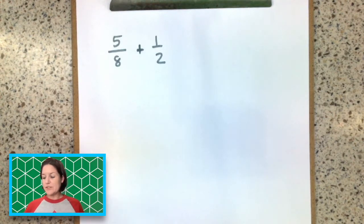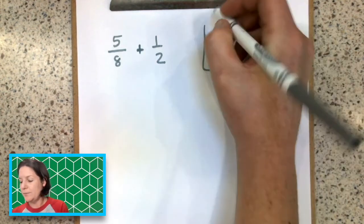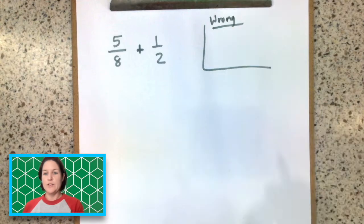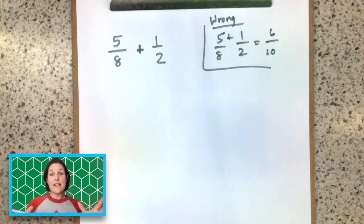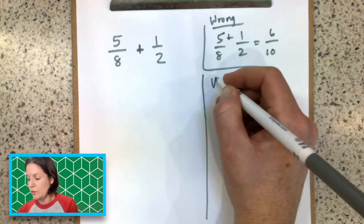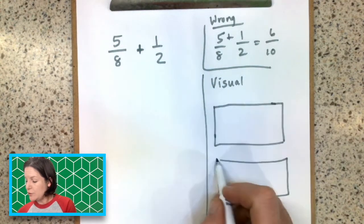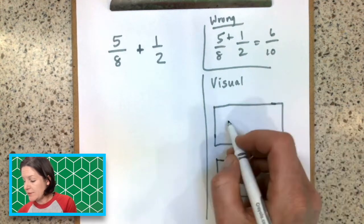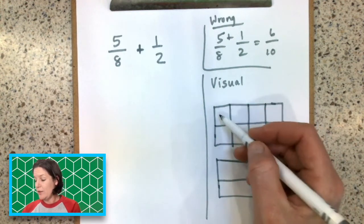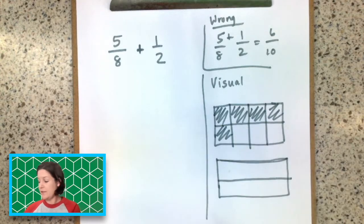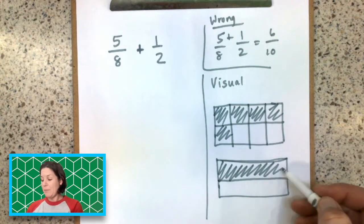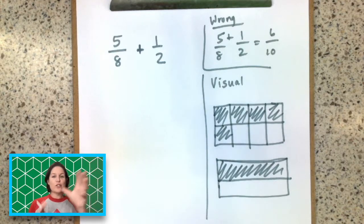So here we have 5 eighths plus 1 half. And sometimes what students might think to do — which is wrong — they think that they can just add across to get 6 tenths. And that's not what you do. Let me explain why that's not what you do by using a visual. So here is a visual representing what's going on: we have two different fractional pieces — we have 5 eighths plus we have 1 half. But the pieces are different sizes, so we can't just join them together.